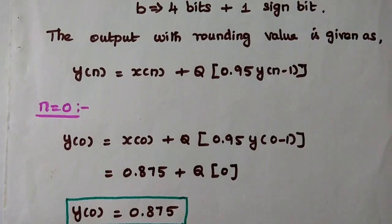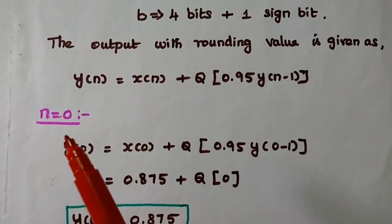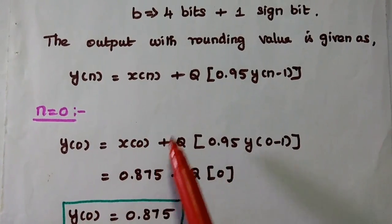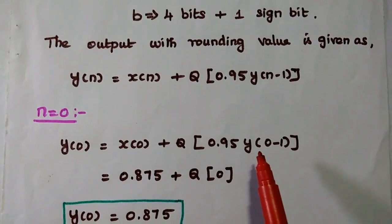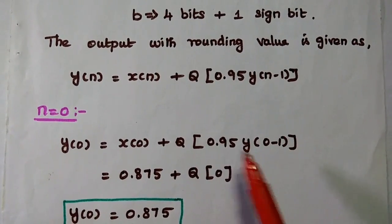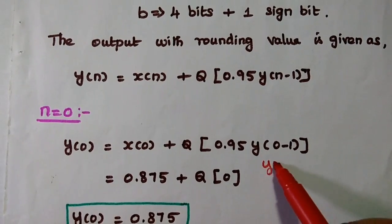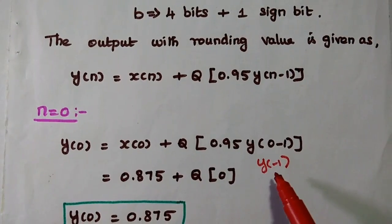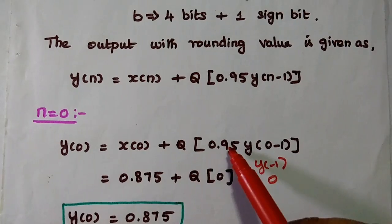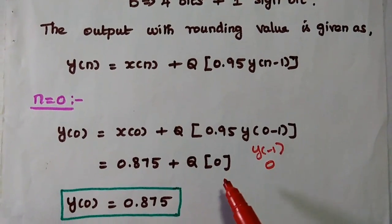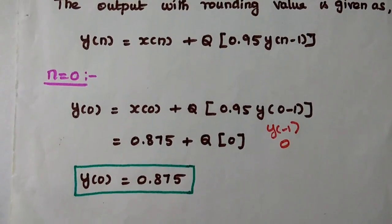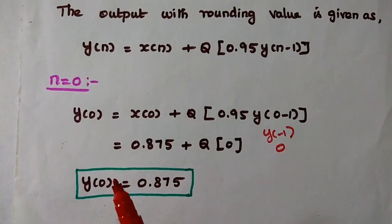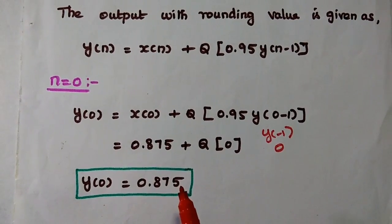Next we find the output values. For n equal to 0, the equation becomes y(0) = x(0) + Q[0.95·y(−1)]. Since there is no previous output, y(−1) is 0, so 0.95 multiplied with 0 is 0 — nothing to be quantized. And x(0) value is 0.875. Therefore, the output y(0) is equal to 0.875.